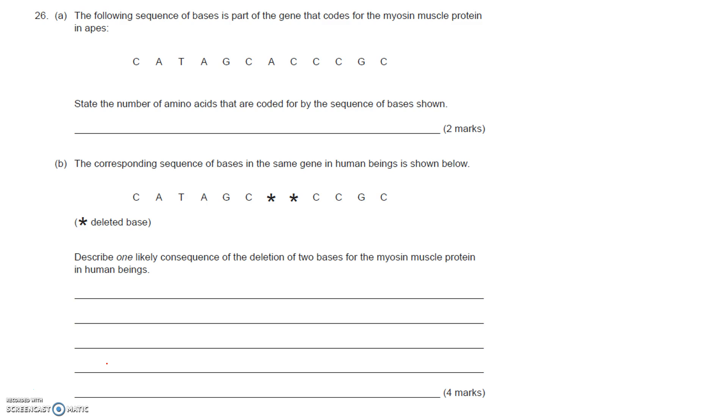This one is from the 2017 paper and it's a short answer question. The following sequence of bases is part of a gene that codes for the myosin muscle protein in apes. You don't have to worry about which protein it is. The important thing here is that you're told that it's a gene that codes for a protein.